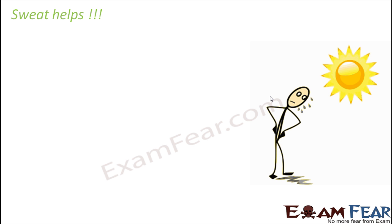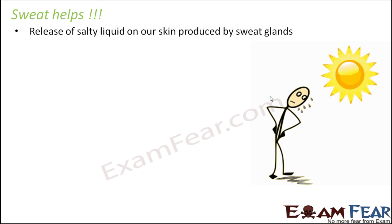Sweat is more commonly seen during summers. It is a salty liquid on our skin produced by the sweat glands. You can tell sweat is salty because during summers, when you sweat a lot, you can see white patches or white marks left on dark-colored clothes. Those white marks denote the presence of salt in your sweat. So sweat contains a lot of salts and other unwanted materials that the body wants to get rid of — and that's how sweat helps in excretion.